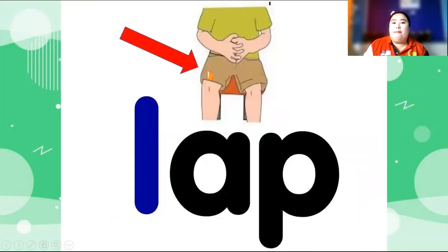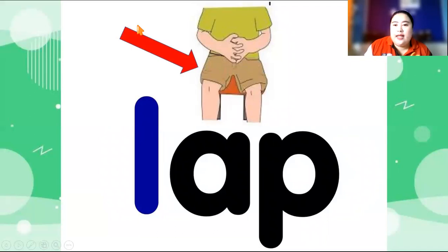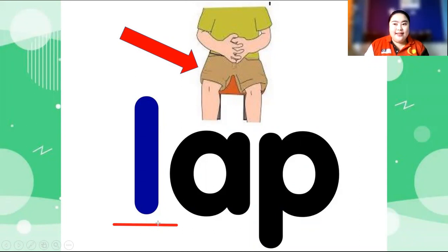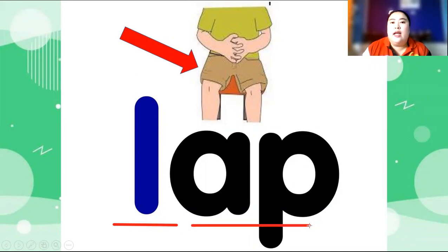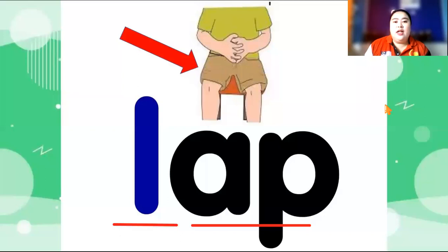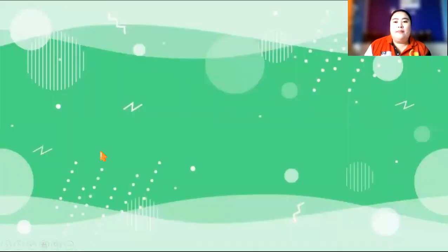Okay, lap. Lap. Let's sound the blue letter first. Lap — the letter is L. How is the sound? L. A and P — how is the sound of A and P? A and P makes the sound of AP. So L, AP is lap. Come again, children — lap. Very good, children.